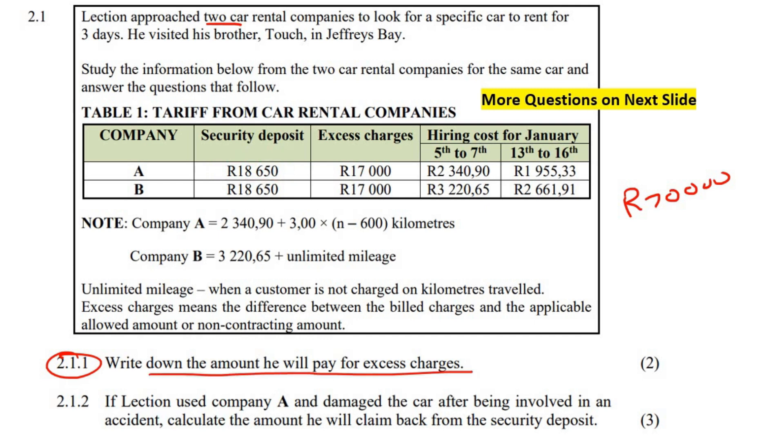So it says write down the amount that you'll pay for excess - that is 17,000 Rand.